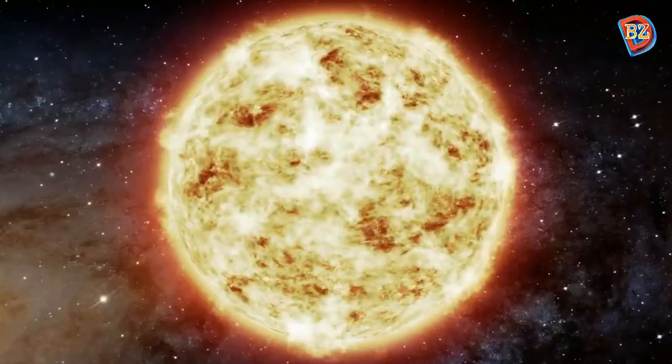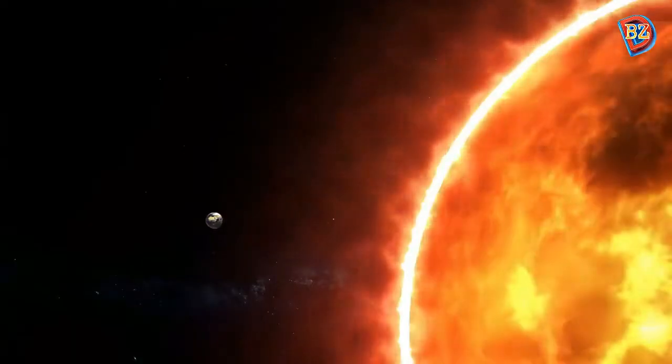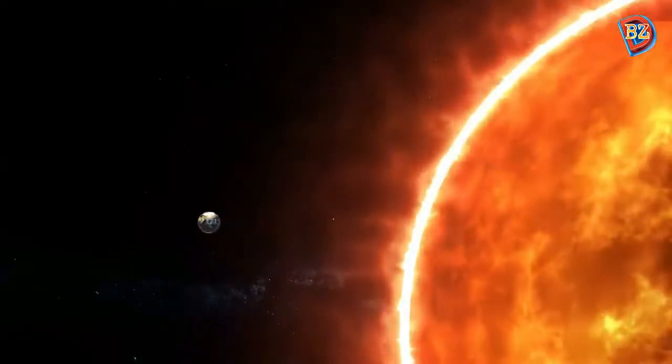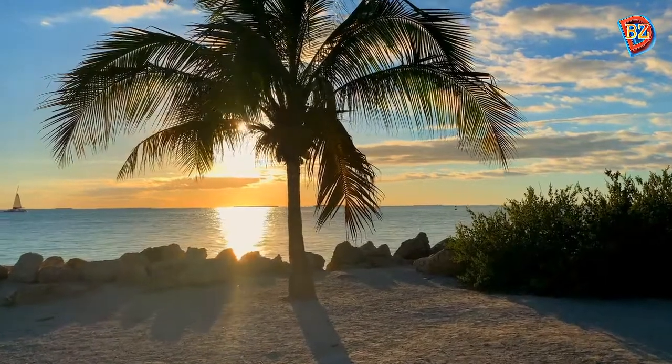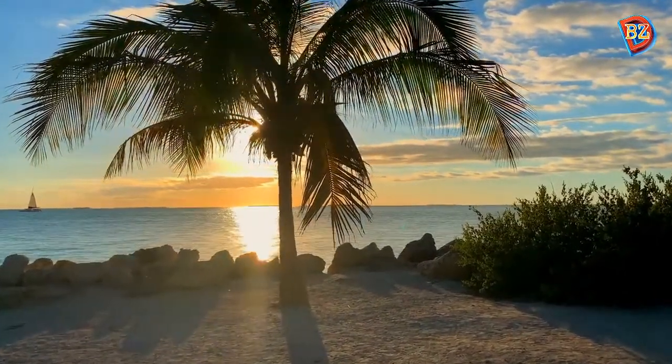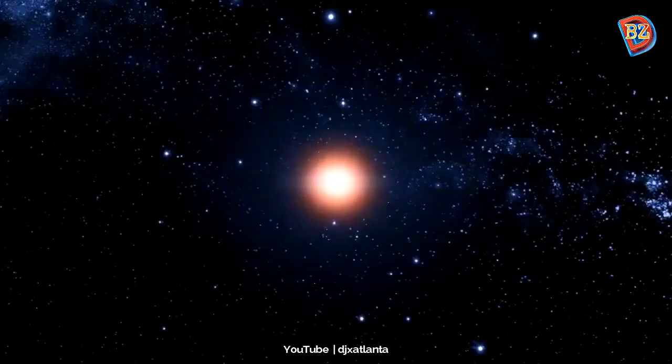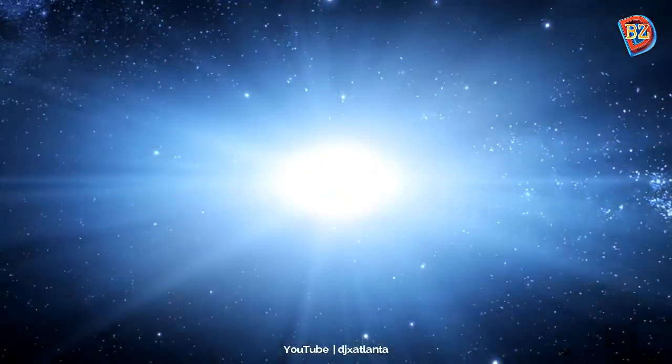The Sun is about 4.5 billion years old and 150 million kilometers away from Earth. The light from the Sun keeps our planet warm and worth living. The Sun is a star, and when a star explodes, it is called a supernova.